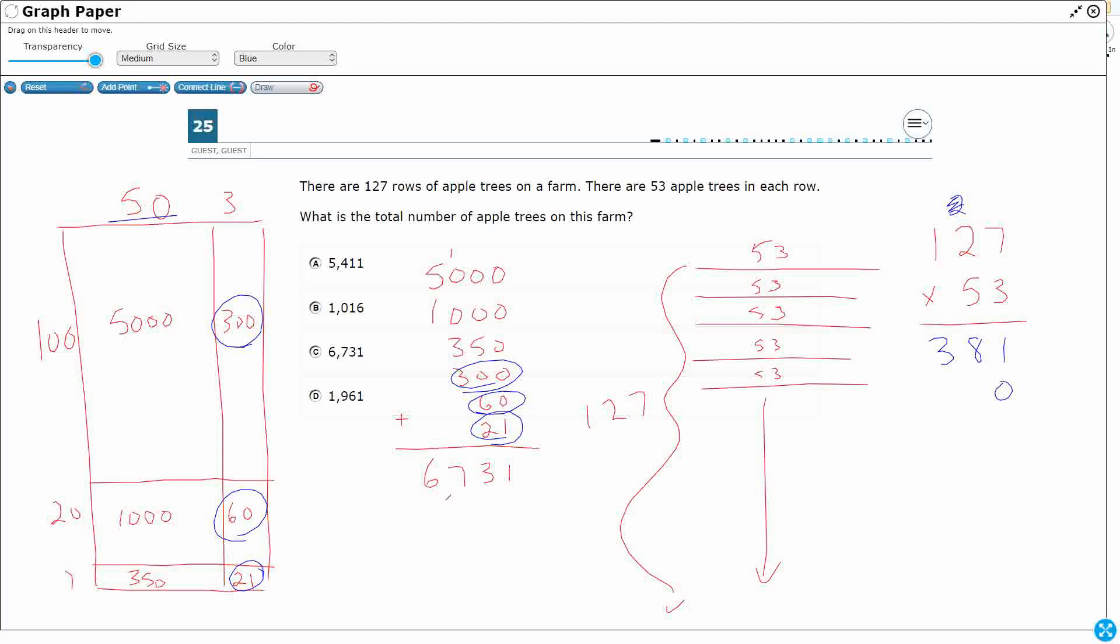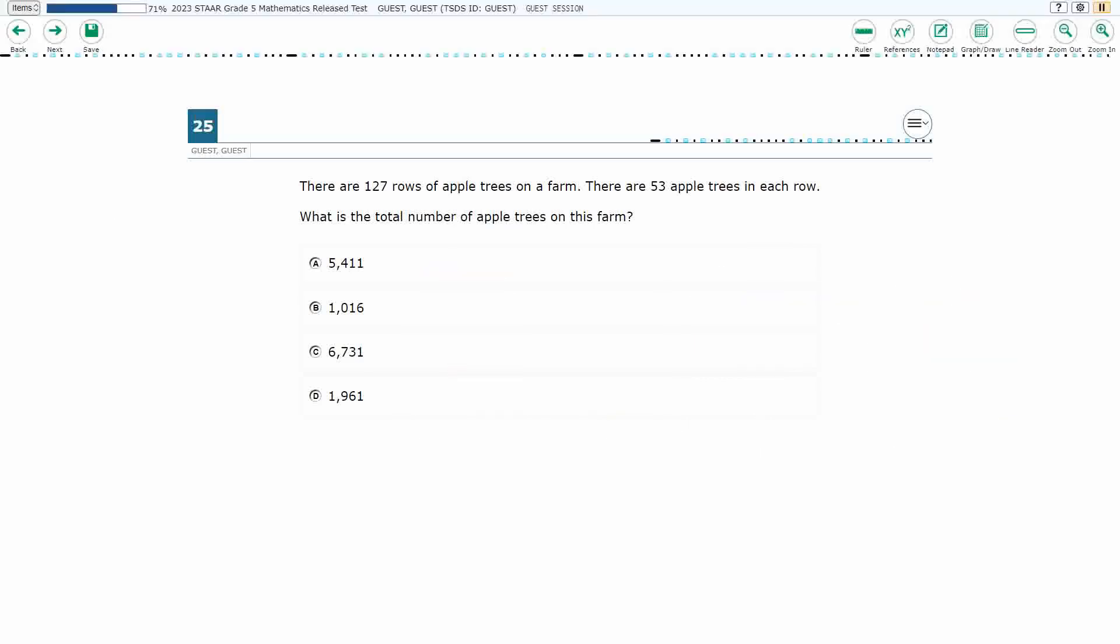So I'm going to say 5 times 7 is 35, but really that's going to be 350, because it was actually a 50. Then I'm going to do 5 times 2 is 10, carry that 3, that's 13, but really that 10 is a 20 and a 50, so I need to add two zeros. There's my 1000, and then 5 times 1 is 500, 600. So what you have here is a 1, that's a 13, that's a 7, there you go, 6,731. Our answer is C.